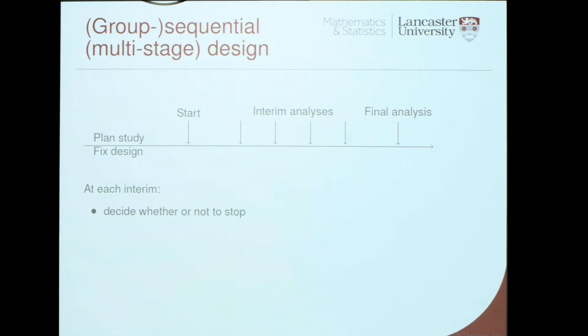Basically, there are three decisions we can make at each interim: stop — treatment doesn't seem to work; stop — treatment seems to work brilliantly; or don't know, need more data. This will be much more efficient than the single stage design, because trials on treatments that aren't working are going to be stopped quickly, while trials on treatments that work can also be stopped quickly.